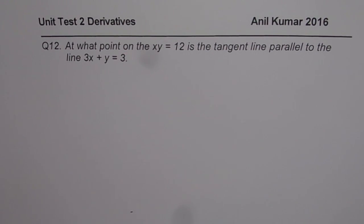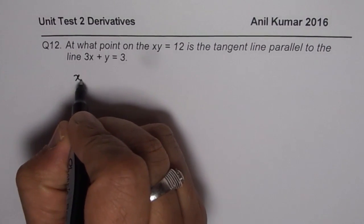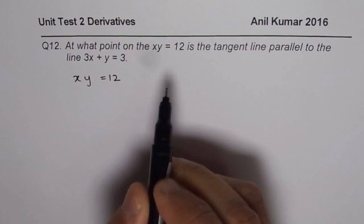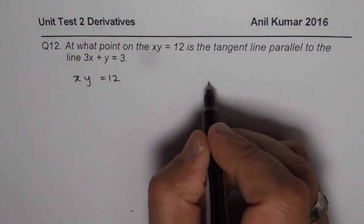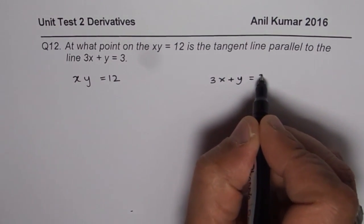At what point on the xy = 12 is the tangent line parallel to the line 3x plus y equals 3? So we are given a function which is x times y equals 12, and we need to find a point on this function where the tangent line is parallel to the line 3x plus y equals 3.